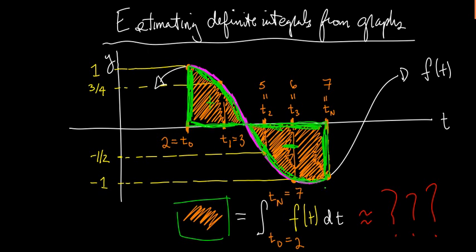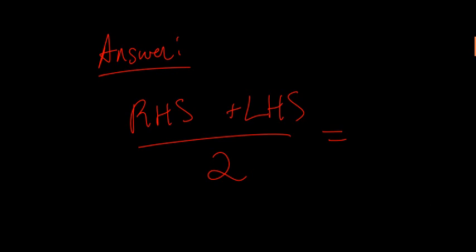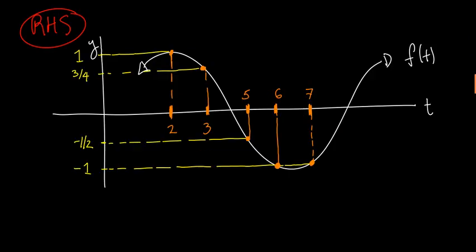This is what we're after: the definite integral of function f over the region 2 to 7. We're going to use Riemann sums. To get the best estimate for this integral, we take the right-hand Riemann sum and the left-hand Riemann sum, and take their average. Let's go ahead and compute the right-hand sum.